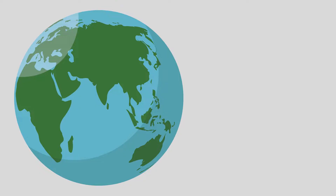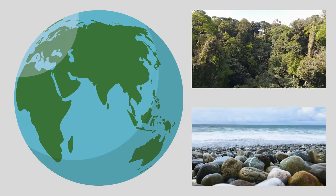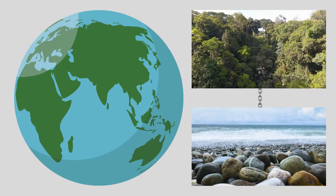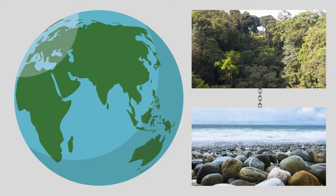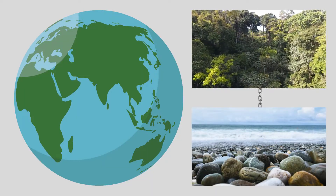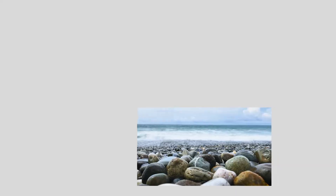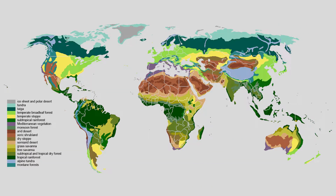Think about the whole of planet Earth. In some way, all the living and non-living things on the planet link together and affect each other, so you could argue that the entire planet is just one big ecosystem, because it still fits that definition.